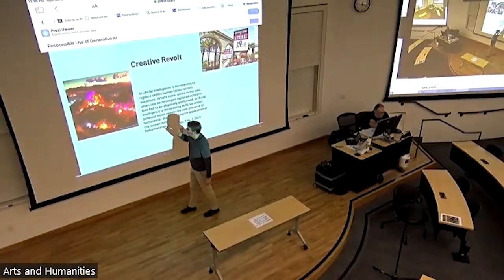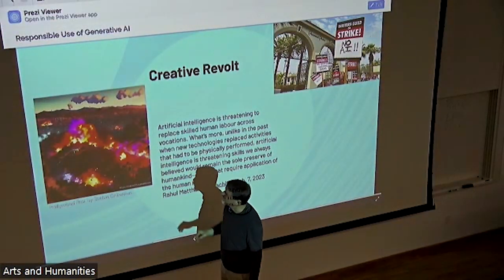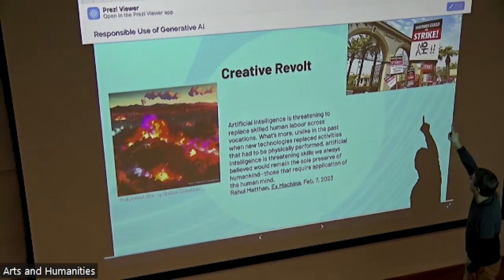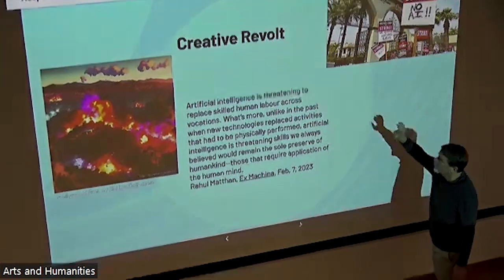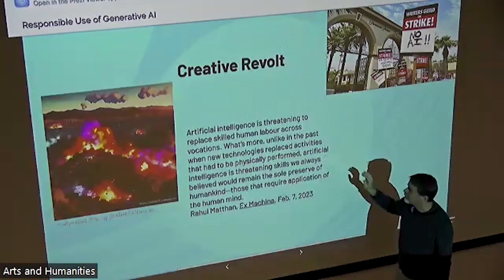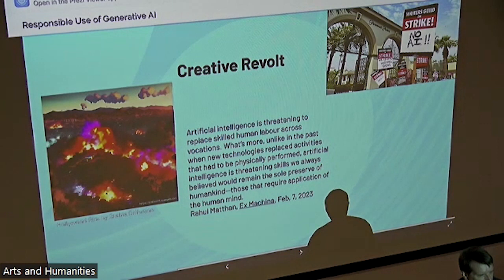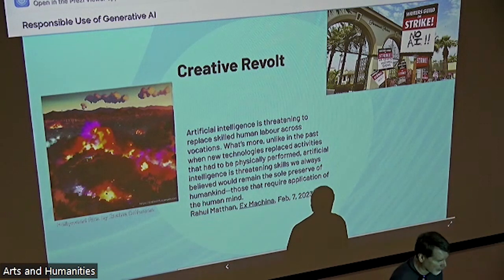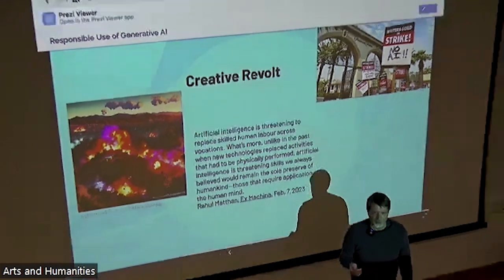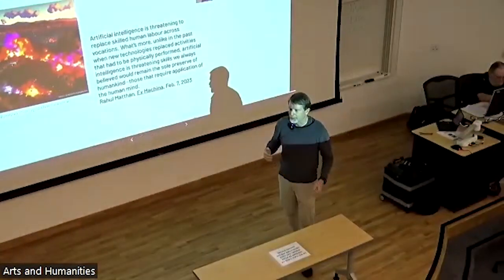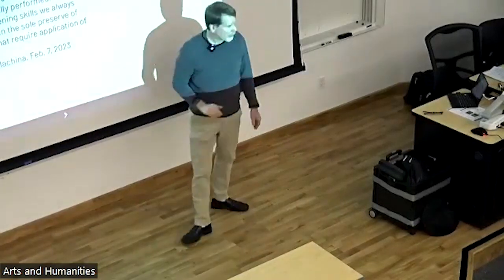I asked Stable Diffusion to give me a picture of Hollywood rioting over AI, and this is what it came up with — pretty good, looks about right. In reality: the Writers Guild strike. Artificial intelligence is threatening to replace skilled human labor across vocations. Unlike the past, when new technologies replaced activities that had to be physically performed, AI is threatening skills that we believed would remain the sole preserve of humankind. We didn't care much when blue-collar jobs were being automated — very few of us in the university paid much attention. But now the automation is coming literally for my job and for the jobs you're training yourselves for, and now we really care.